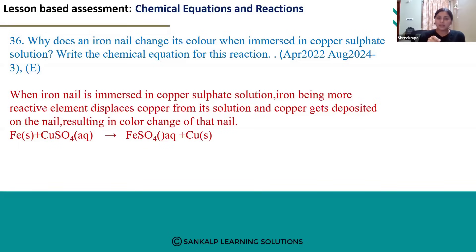When we dip the iron nail inside copper sulfate solution, due to the high reactivity of iron, it displaces copper from the copper sulfate solution and that copper gets deposited on the surface of the iron nail. So we can observe a change in color of the iron nail — gray color changes to brown color — because of the copper deposited on the iron nail.